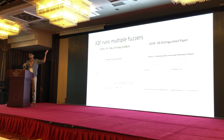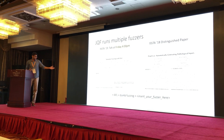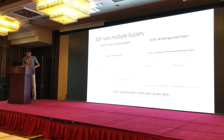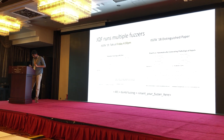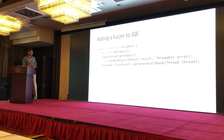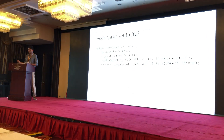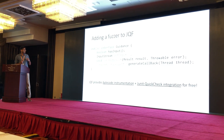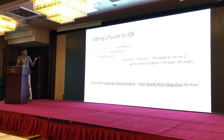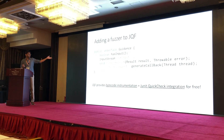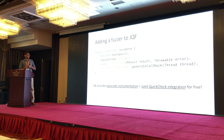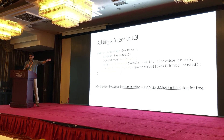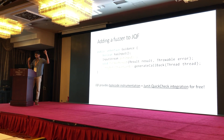JQF is broader than just ZEST — it's a platform where you can run many different fuzzing algorithms. Another algorithm in JQF is PerfFuzz, presented at ISSTA last year, which generates inputs that exercise worst-case complexity to find performance bugs. JQF also integrates AFL, a popular fuzzing tool, as an external plugin. You can also write your own fuzzer easily by implementing the guidance interface: provide getInput to generate a new input, a result callback when a test finishes, and listen to trace events like branch coverage or function calls. JQF handles JVM bytecode instrumentation and QuickCheck generator integration — all you provide is the fuzzing algorithm logic.